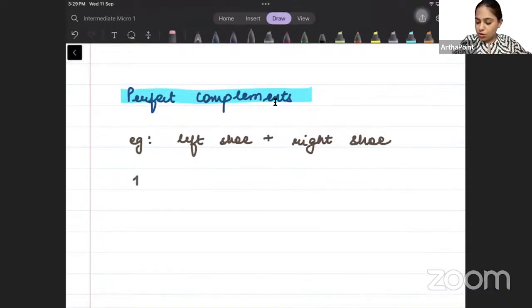1 to 1 means what? That for every one left shoe, if I have one left shoe, I need exactly one right shoe.